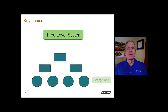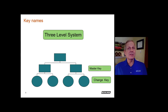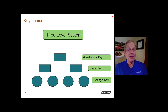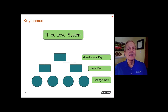Moving to a three-level system, we still use change keys at the very bottom for individual doors. Master keys now open a group of doors — perhaps a department or all doors on a particular floor. For example, one cleaning crew cleans the first floor and another cleans the second floor, so you give them two different master keys. The building owner, security, or maintenance personnel would get a grand master key fitting all doors in the building — also assigned to the fire department or kept in a key keeper box at the front of the building.